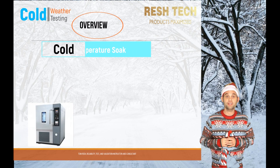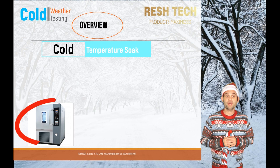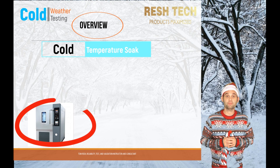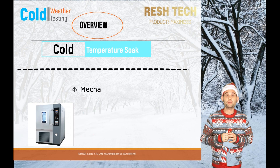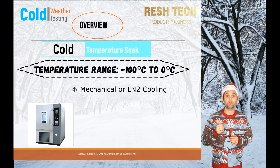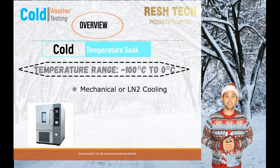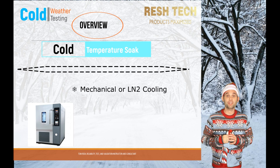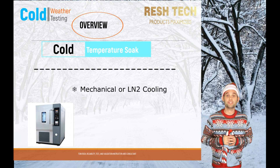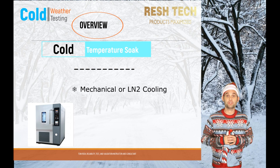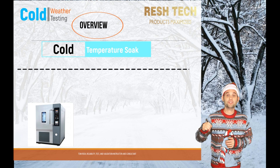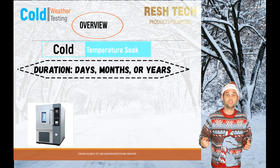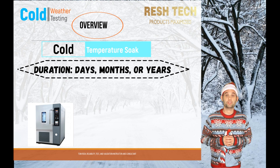Cold temperature soak testing is typically performed in a thermal test chamber as pictured. The temperature range can be as low as negative 100 degrees Celsius and up to zero degrees Celsius. The cooling of the test chamber can be done mechanically using a refrigeration system, or using liquid nitrogen cooling. Testing durations can last days, months, or even years depending on your system's requirements and whether you are using acceleration factors for your test.